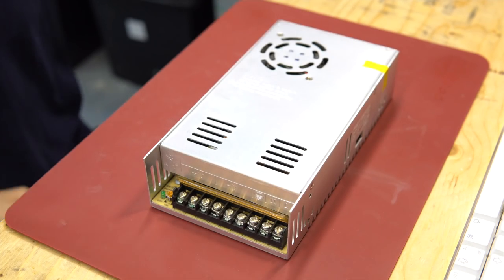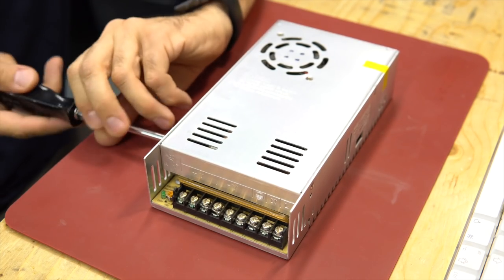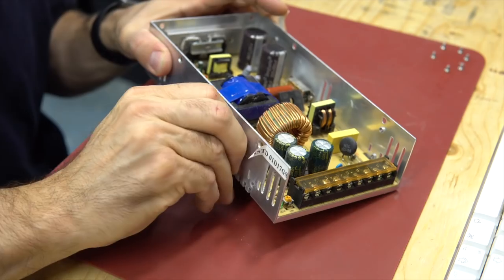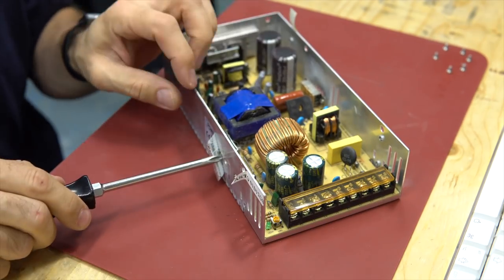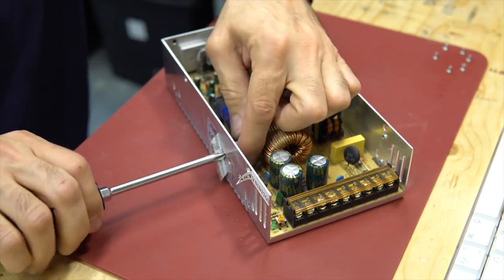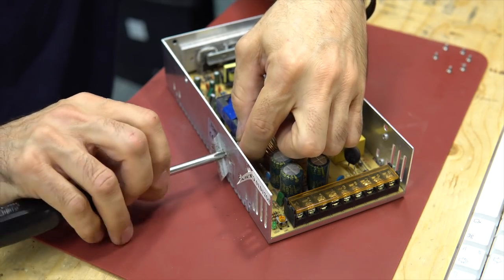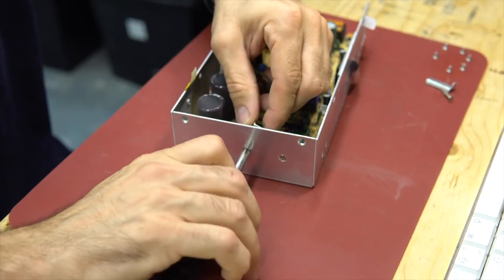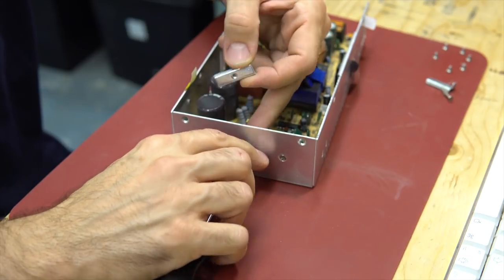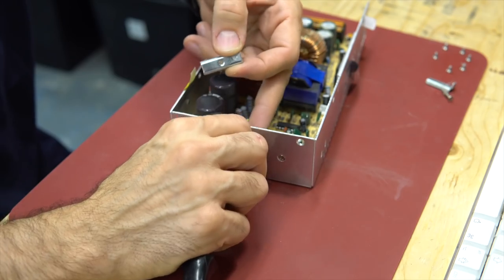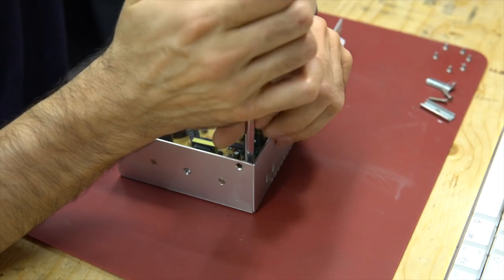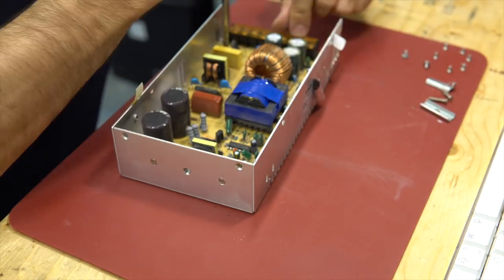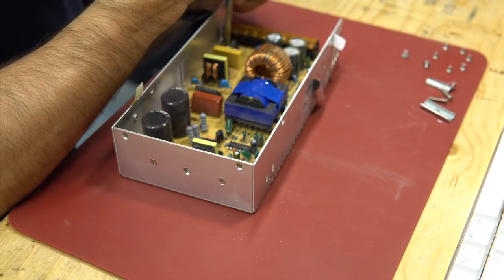Okay, first let's open up the power supply. Disconnect the fan and remove the screws under this sticker to have the main board free. Remove the screws holding down the main board. There was some missing from factory. Not a good sign.